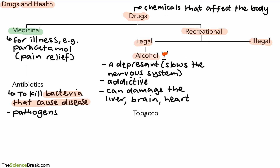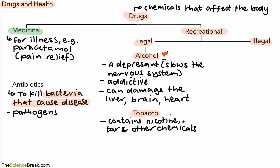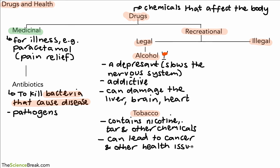As well as alcohol, we have tobacco. Tobacco itself is not a drug — it's the chemicals in the tobacco. One key chemical is nicotine, which is the addictive chemical found in tobacco. We also have tar and other chemicals, which have negative effects on the body. For example, tar can cause cancer, commonly lung cancer, but it can lead to other kinds of cancers as well given the many chemicals found in tobacco.